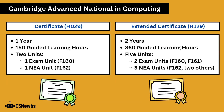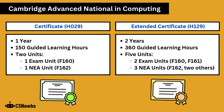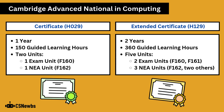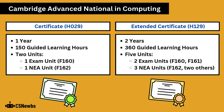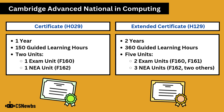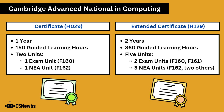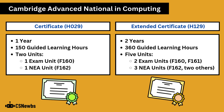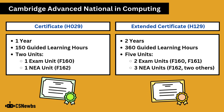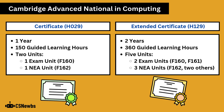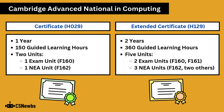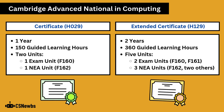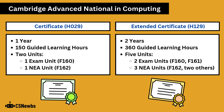There are two types of certificates that can be earned in this qualification: a certificate, which is similar in nature to an AS level in that it's typically one year in length, and an extended certificate, which is similar in nature to an A level, generally being studied across two years.